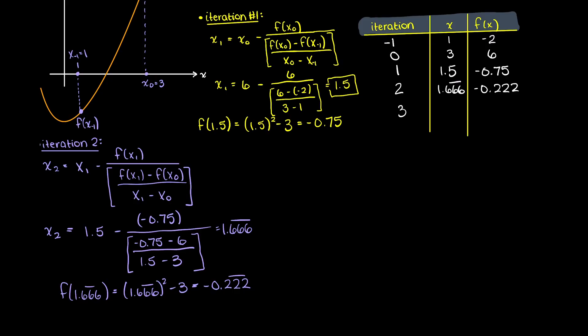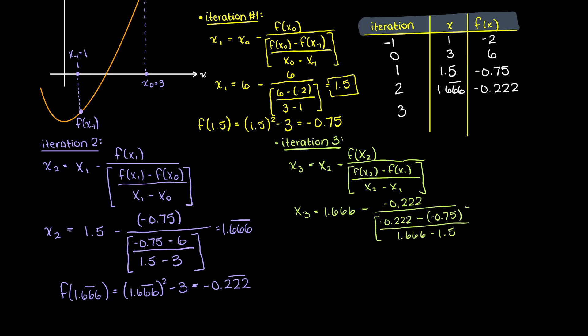Then, for our final iteration, we will do the same thing. Filling in all our variables, we are left with 1.736 as our final answer.